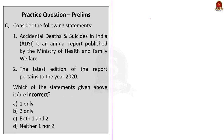Moving to the final question, a two-statement question asking for the incorrect statement. Statement 1: Accidental Deaths and Suicides in India is an annual report published by the Ministry of Health and Family Welfare — this is incorrect; it is published by the National Crime Records Bureau (NCRB). Statement 2: The latest edition of the report pertains to the year 2020 — this is also incorrect; the latest edition was published for the year 2021. The question asks for the incorrect statement, so both one and two are incorrect. The correct answer is option C: both one and two.